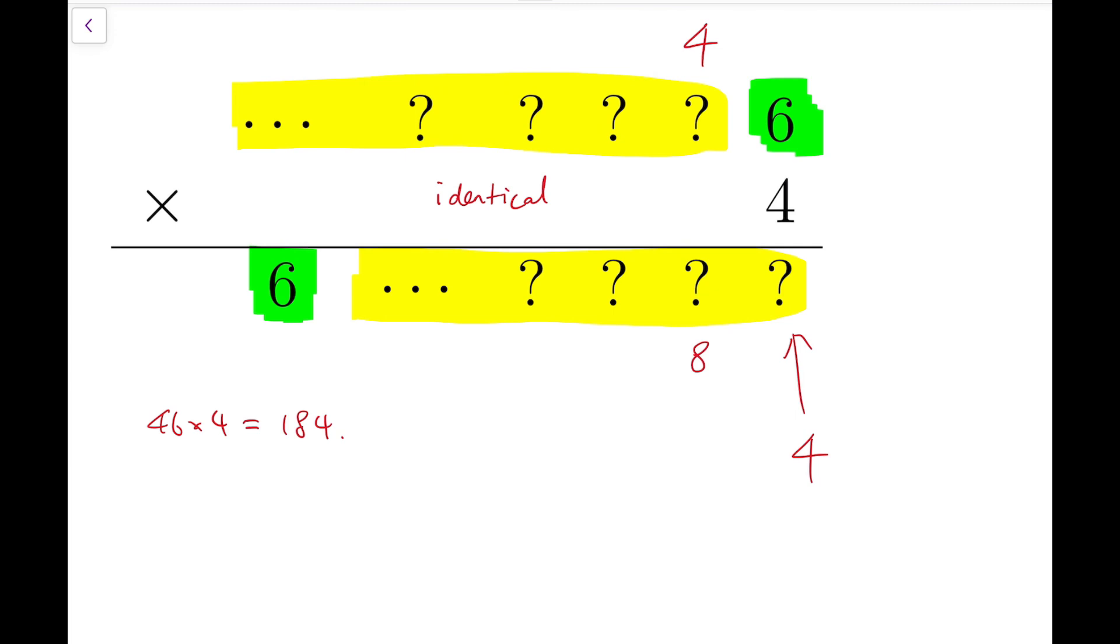Now if this is 8, then we have the yellow block to end with 84, and so we have the third digit at the top. Now for this sequence, we can iterate this work by considering 846 times 4, and that is 3384, so that fixes the third last digit of the yellow block.